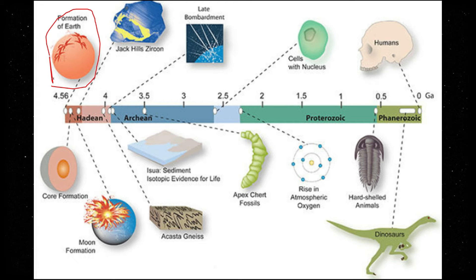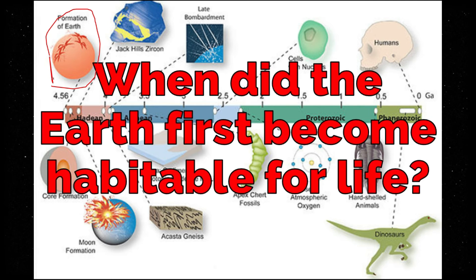The oldest fossil record of life are stromatolites, produced by an archaic form of bacteria from about 3.4 billion years ago. The question remains: when did the Earth first become habitable for life?